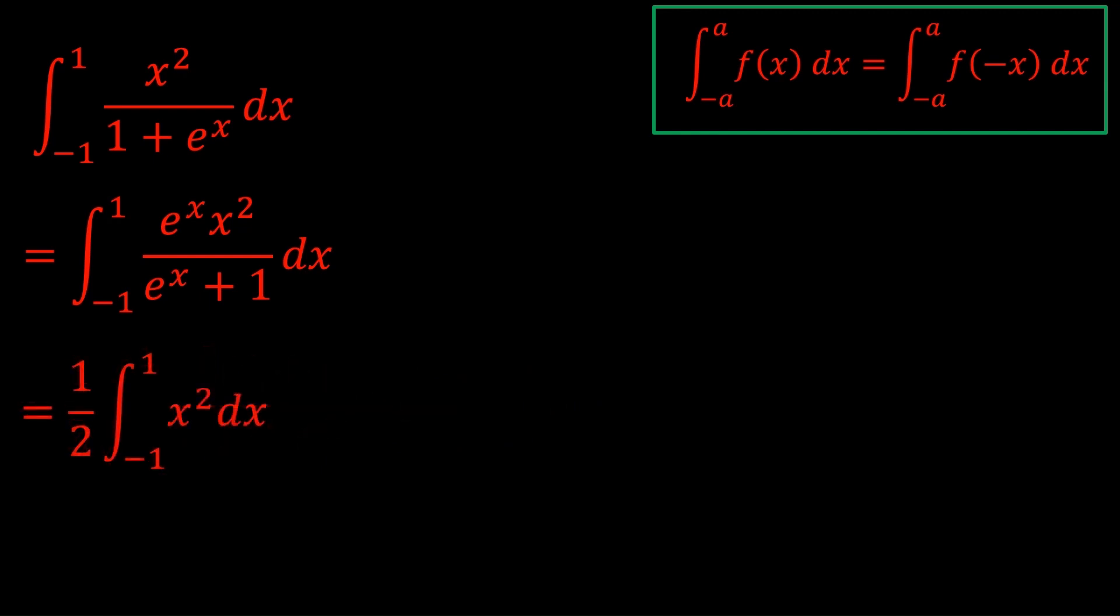And notice that x² can be factored. And when you factor it, you can actually cancel out the 1 + e^x on the top and bottom. The integral from -1 to 1 of x² is twice the integral from 0 to 1 because x² is an even function. And there we go. We have our answer of 1/3.